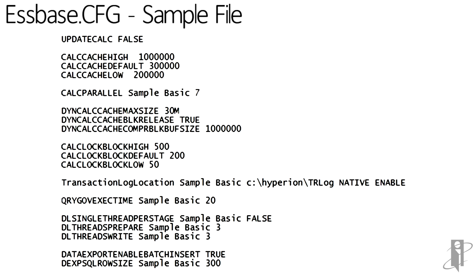Here's an example of an sspace.cfg file wholly oriented around optimizing Sample Basic. The line at the top — UPDATECALC FALSE — turns off intelligent calculation for the entire server. The next section sets the calc cache numbers. Then, to make Sample Basic calculate quickly, seven CPUs are allocated to it. Other settings include the size of the dynamic calc cache, how many lock blocks to use, and some query governors to prevent massive queries against Sample Basic.